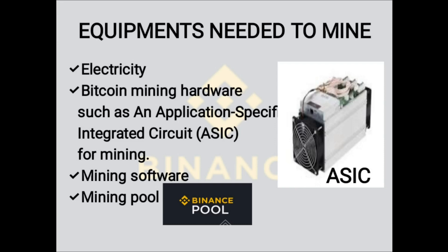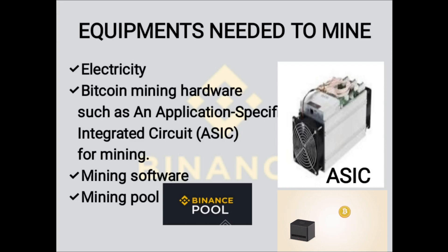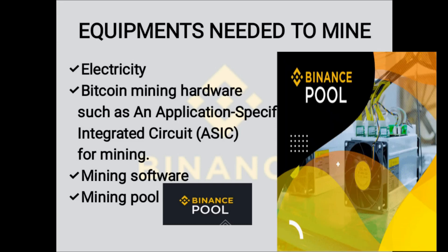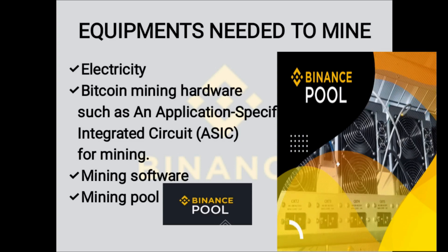To get started with Bitcoin mining, you need equipment. First, you need a constant, uninterrupted power supply. You need Bitcoin mining hardware, such as an Application-Specific Integrated Circuit (ASIC), like the picture shown on the right-hand side of the slide. You also need mining software to connect your miner with your hardware, and you need a mining pool — that is where Binance Pool comes in.